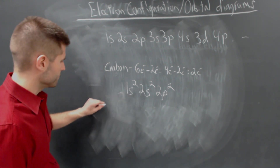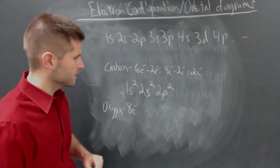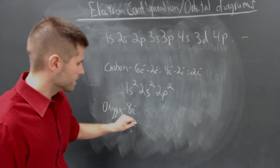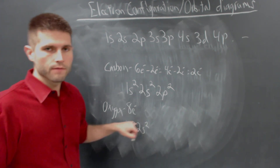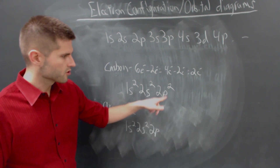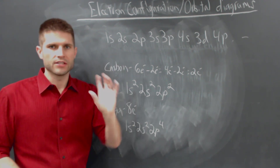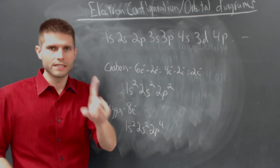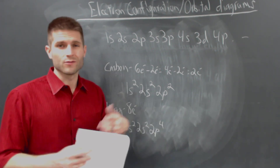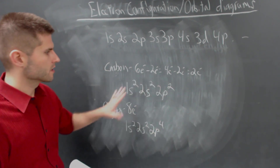Let's do the electron configuration for oxygen. Oxygen has atomic number 8, so it has 8 total electrons in a neutral oxygen atom. We start by putting 2 electrons in the 1s, then 2 electrons in the 2s — we've now used up 4 electrons. The p orbital can contain 6 electrons, but we only have 4 left, so we put 4 in the 2p. To summarize: s has 1 orientation and holds 2; p has 3 orientations and holds 6; d has 5 orientations and holds 10; and f has 7 orientations and holds 14. So the electron configuration for oxygen is 1s²2s²2p⁴.